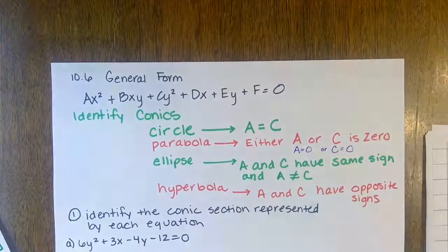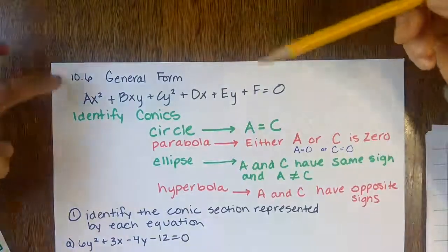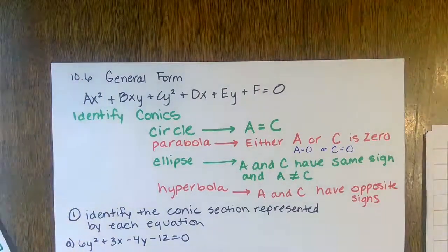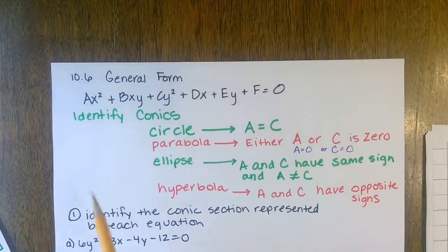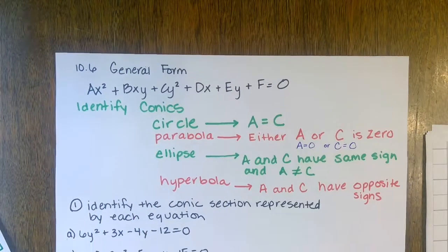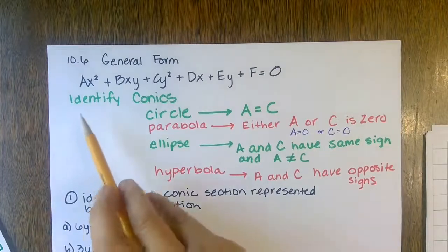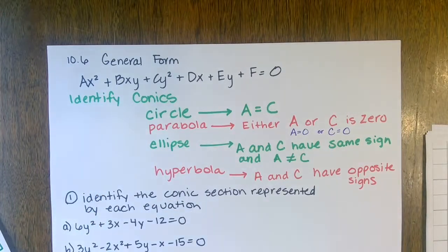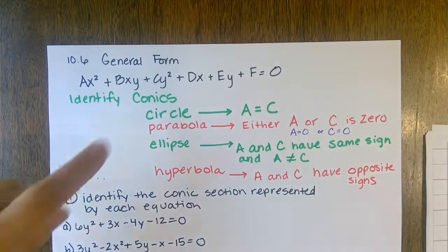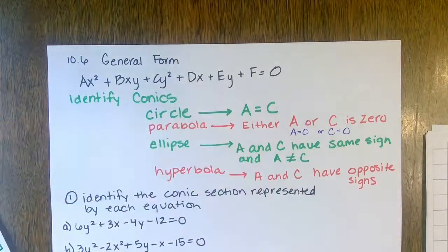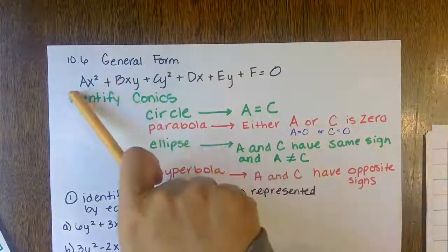Write this down — section 10.6. General form is: Ax² + Bxy + Cy² + Dx + Ey + F = 0.